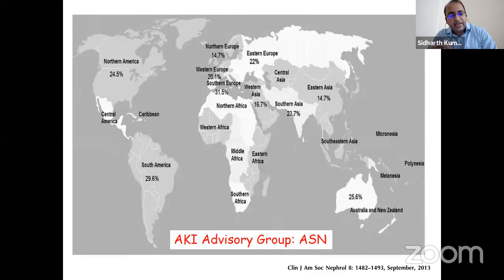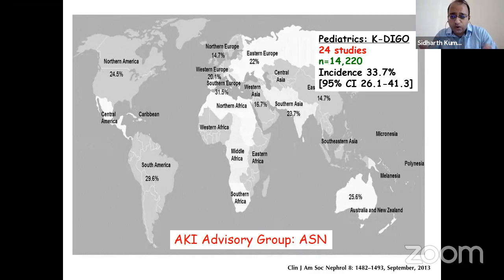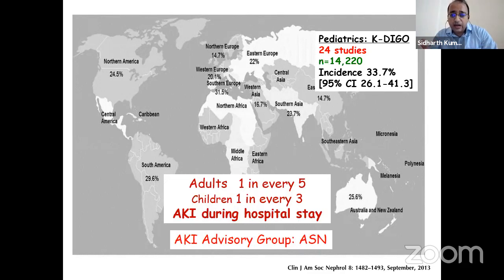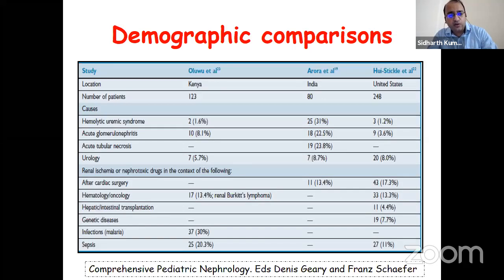The AKI advisory group from the American Society of Nephrology looked at almost 24 studies involving nearly 1,400 children and adults, showing AKI incidence is around 33% in ICUs. It's important to realize that one in every five adults and one in every three children gets an AKI during hospital stay. These children need to be looked at and followed carefully.